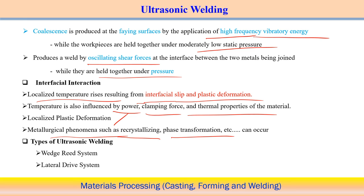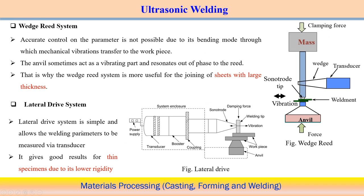Two types of ultrasonic welding systems are used: the wedge-reed system and the lateral drive system. In the wedge-reed (OHD) system, a clamping force mass and transducer create vibratory energy transmitted to the interface via the sonotrode tip. However, accurate control is difficult in this system because mechanical vibration is transferred through a bending mode. The anvil sometimes resonates out of phase with the reed, requiring careful optimization of parameters.